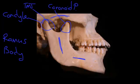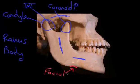Another feature you can see on a mandible — see how this has got a little dent just here? That little dent is called the facial notch. That's where a large artery called the facial artery comes across and runs up across the face to end just in the corner of the orbit. If you run your finger along the lower border of the body of the mandible, you can actually feel the artery running across it.